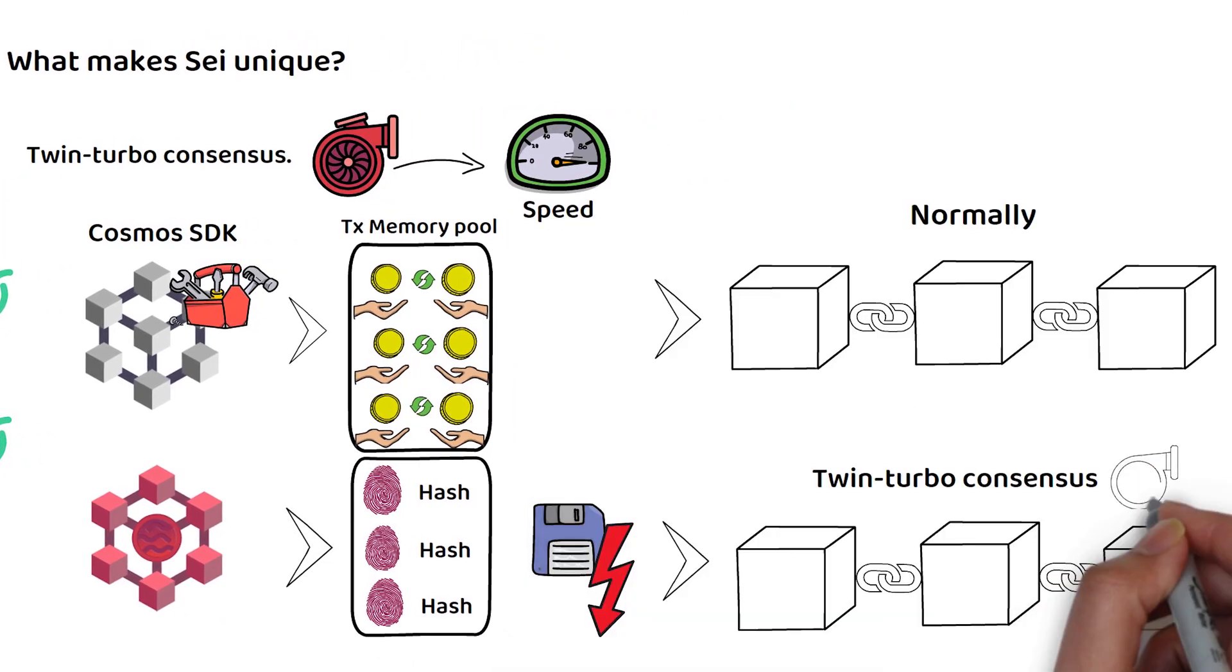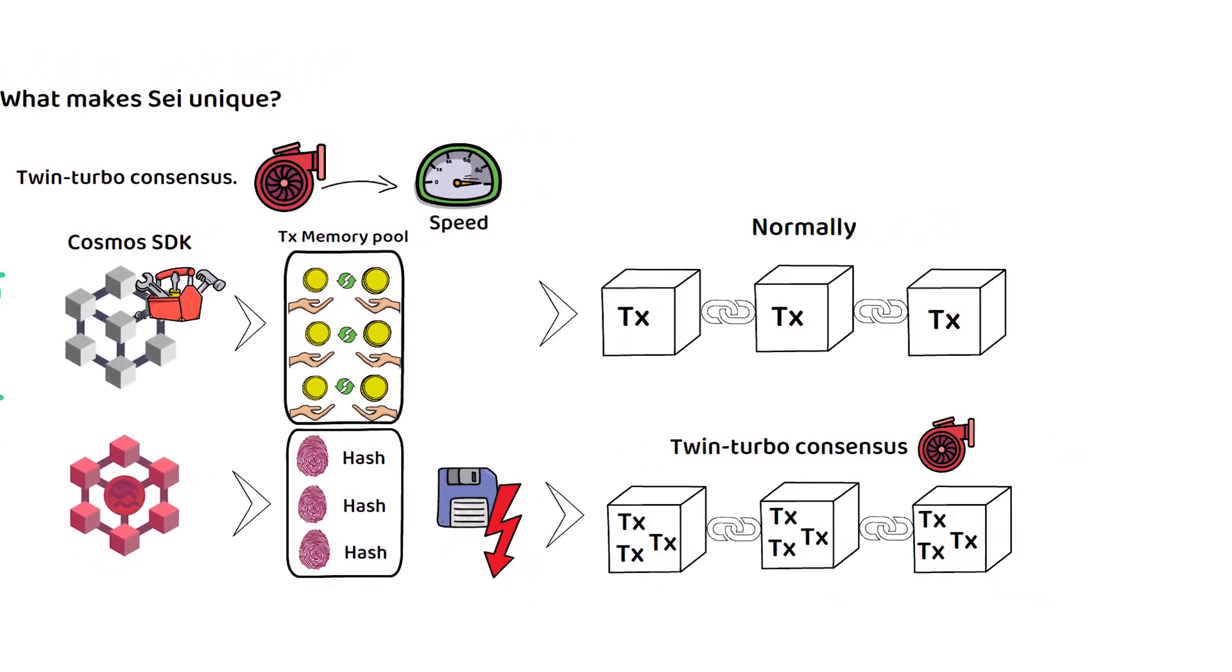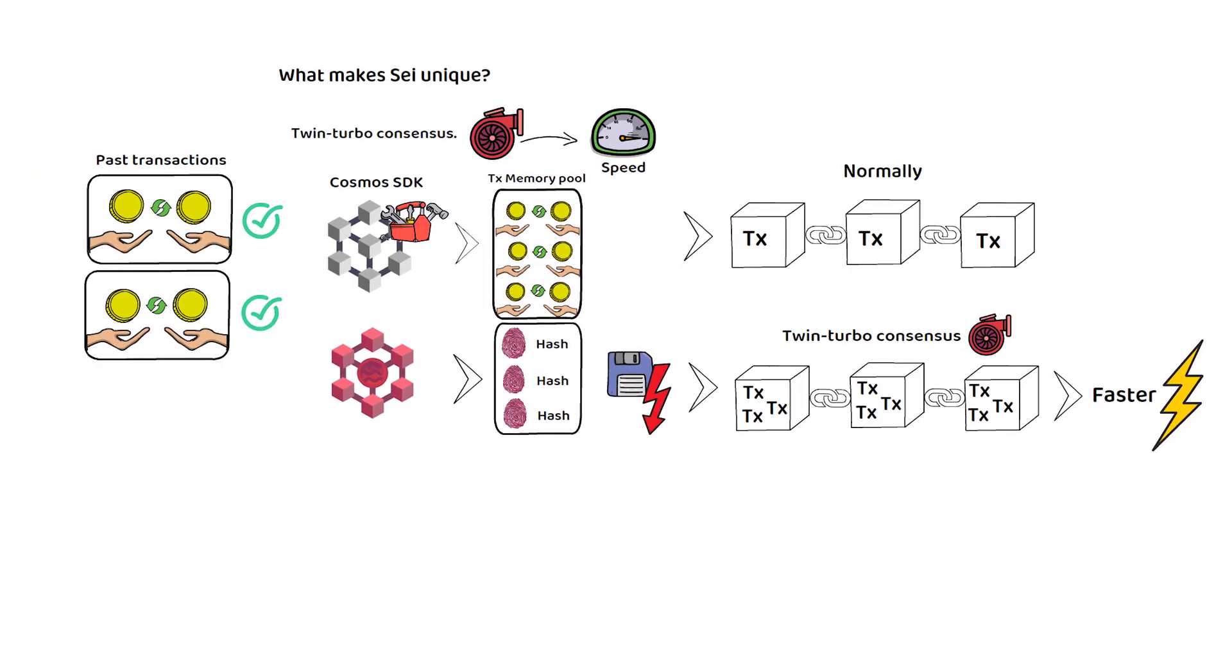Ultimately, this allows more transactions to fit on each block, which allows more transactions to be processed per block, resulting in increased completed transactions per second. So, what about tokenomics?